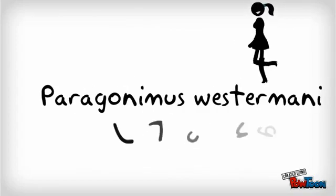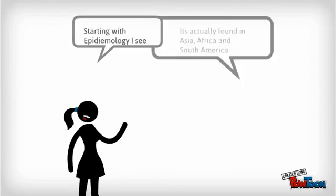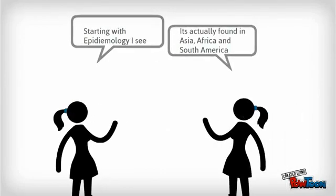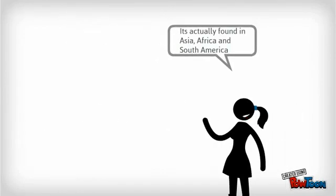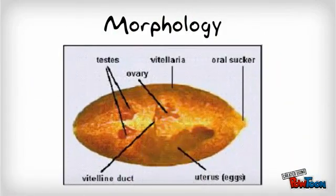Paragonimus westermani: Starting with epidemiology, it is found in Asia, Africa, and South America. Morphologically, it is a plump, reddish-brown oval worm measuring 10 by 4 millimeters.